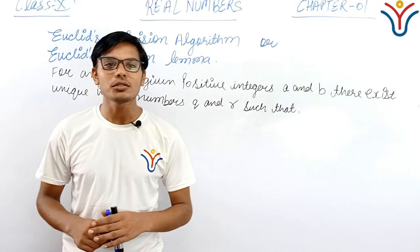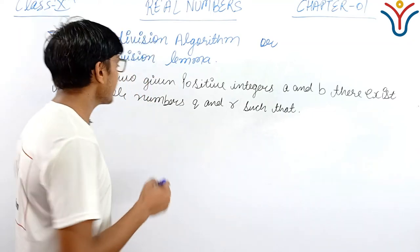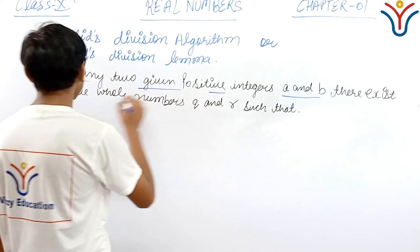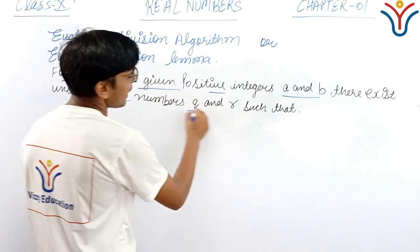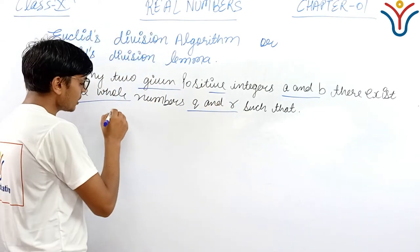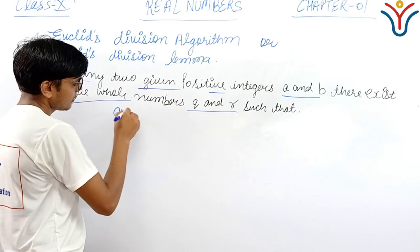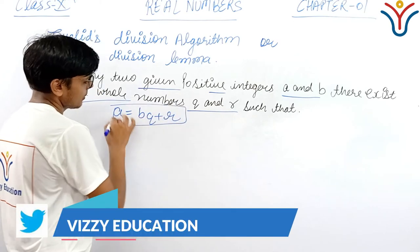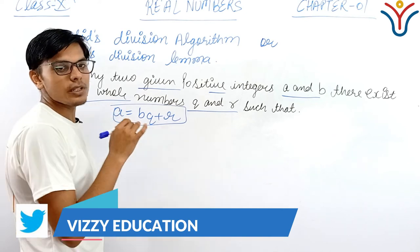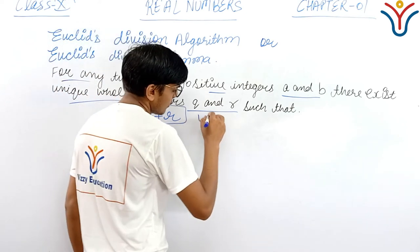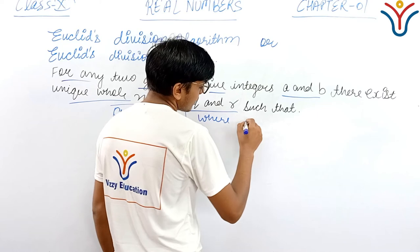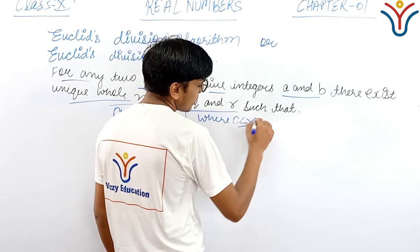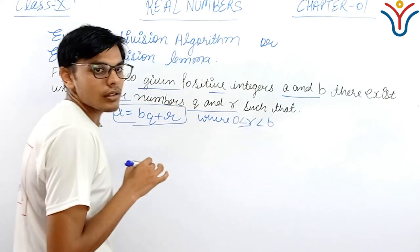Euclid's Division Algorithm or Euclid's Division Lemma: For any two positive given integers A and B, there exist unique whole numbers Q and R such that A is equal to BQ plus R, where R is greater than or equal to 0 but less than B, and A is greater than or equal to B.